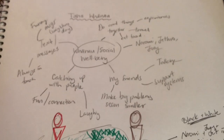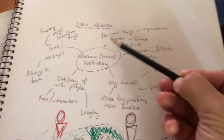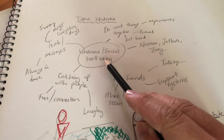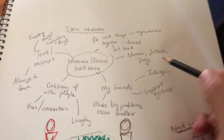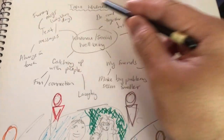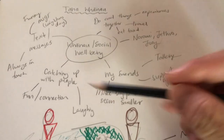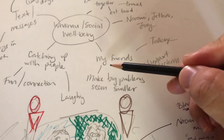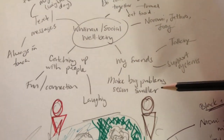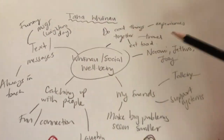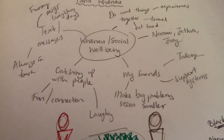Here is my draft for my static image. I've got my brainstorm, and I've written 'whānau and social wellbeing' in the middle. I've just brainstormed everything about my whānau and my friends — I've got Nami, Joey, and Jethro, my friends, and different parts of the things that make up the people that help me with my wellbeing. Things like when I talk to my friends about my problems it makes them seem smaller, catching up with people brings connection and fun, lots of laughter, doing cool things together — and that all contributes towards my overall wellbeing.